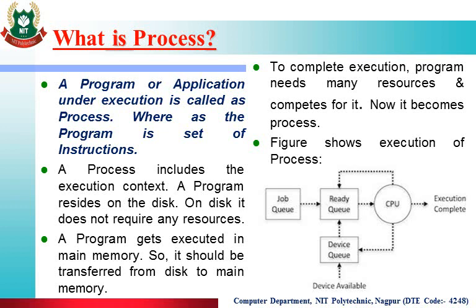Let us take an example: suppose the job queue has n number of processes — consider n equal to 10, so job queue has 10 processes total. But these 10 processes are not ready for starting their execution. After some time, out of these 10 processes, 4 processes get ready for starting their execution. Then the operating system shifts these 4 processes from the job queue to the ready queue. Now in the job queue only 6 processes remain, and in the ready queue 4 processes are ready for execution.